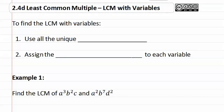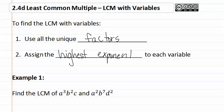2.4d: Least Common Multiples with Variables. To find the least common multiple with variables, we're going to use all of the unique factors and assign the highest exponent to each variable. Let's look at how this works in example one.